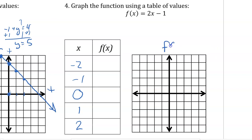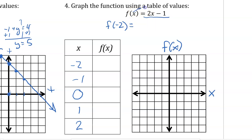f of x means a function of x. We often use that instead of saying y, and we plot it on the y-axis. We'll plug in f of negative 2, evaluating the function where x equals negative 2. The only variable on the right side is x, so we plug in negative 2 and solve. That's negative 4 minus 1, which is negative 5. That is our f of x value, or y value. So when x is negative 2, we go left of the origin and down 5 for y.